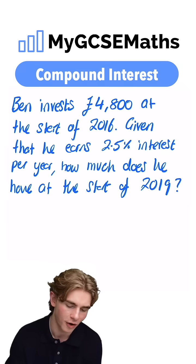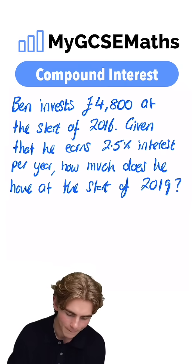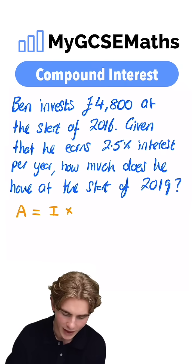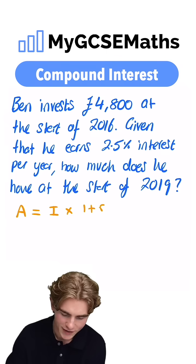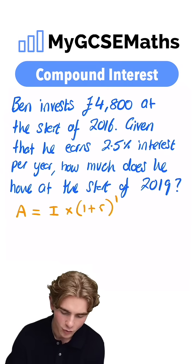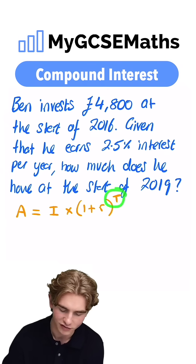When it comes to compound interest, we can say that the amount at the end of the period is equal to the initial amount multiplied by 1 plus the interest rate as a decimal, to the power of t, where t is the number of time periods we have.